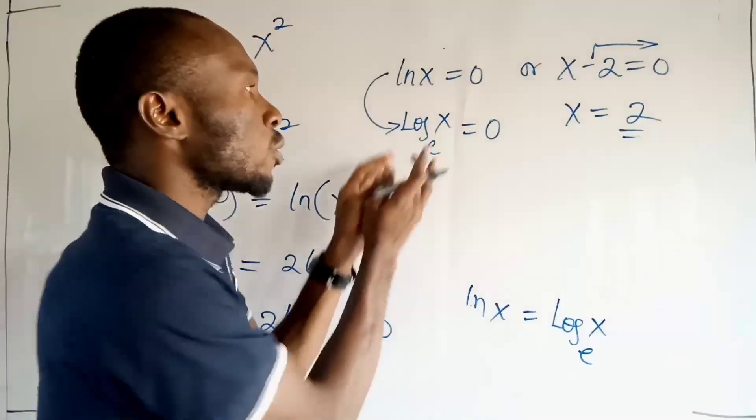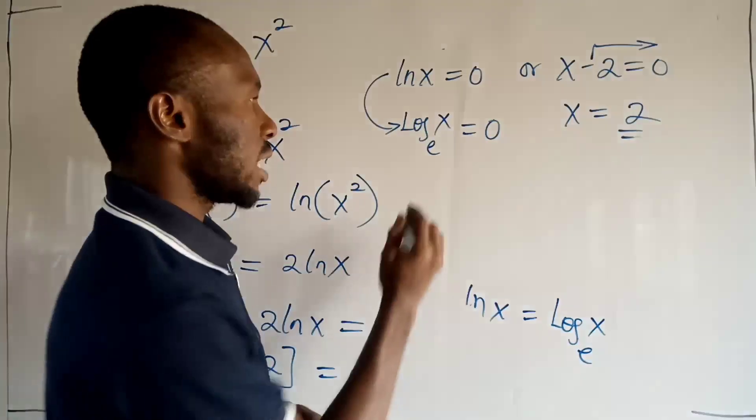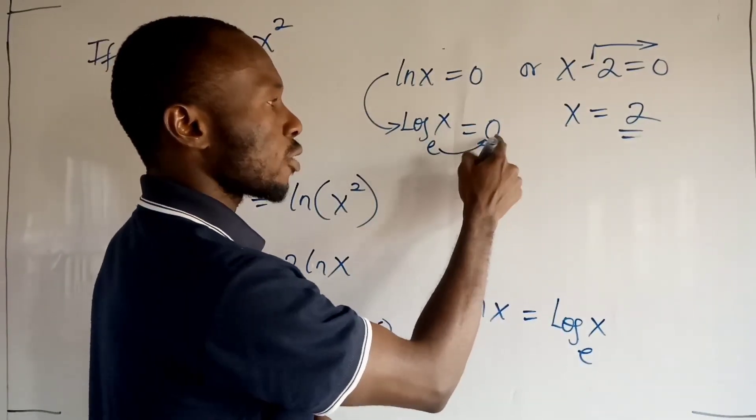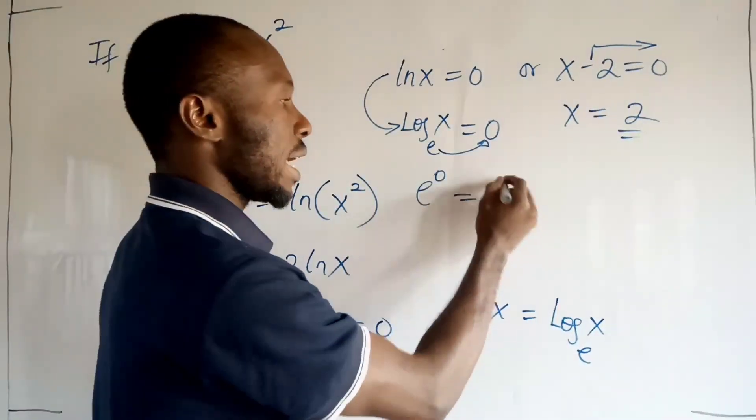Now if you want to transform this logarithmic equation to an exponential equation, then we have e will take 0 as its power. So we have e to the power of 0 equal to the argument which is what? x, right?